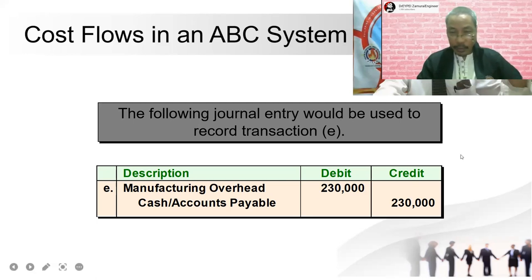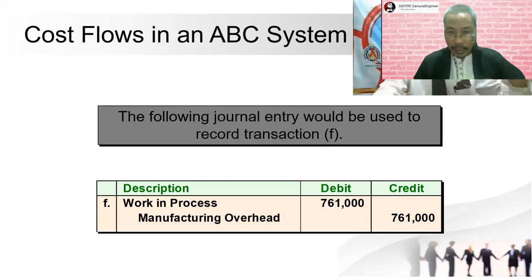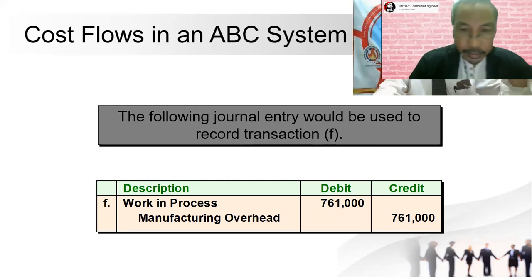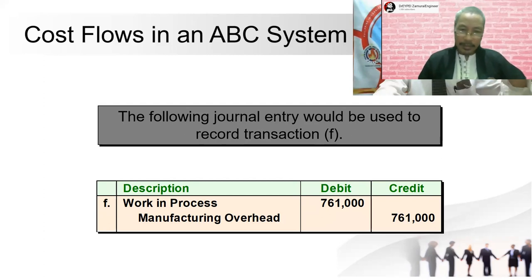For transaction F — manufacturing overhead applied — we debit work in process and credit manufacturing overhead for $761,000.